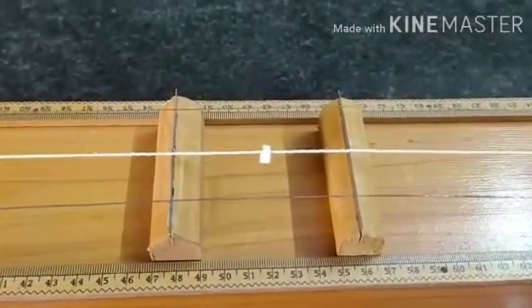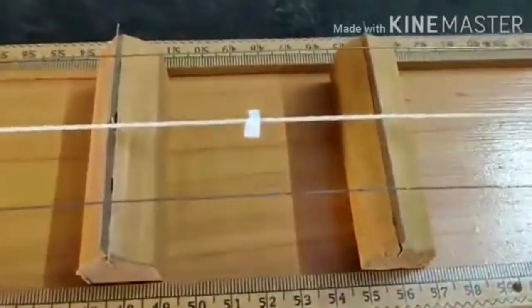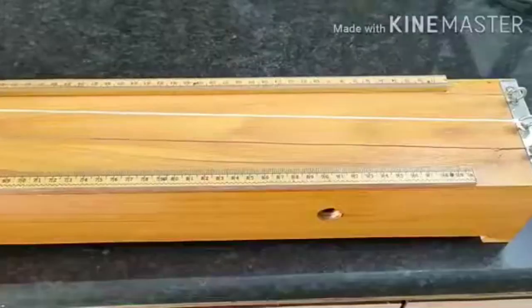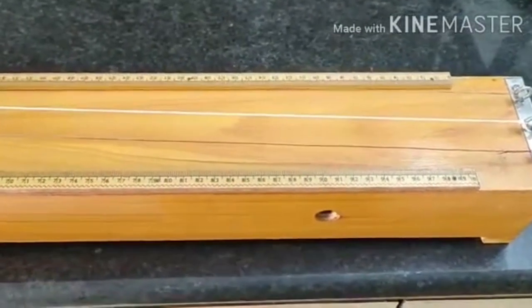Now we will place a light paper rider on the wire midway between knife edges. Observe the entire setup carefully.